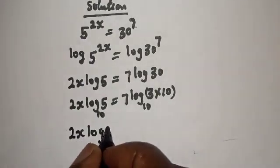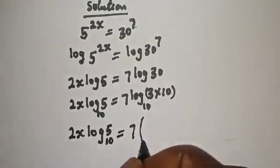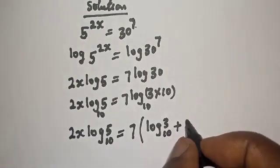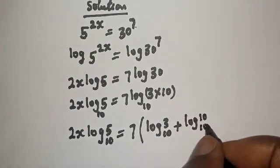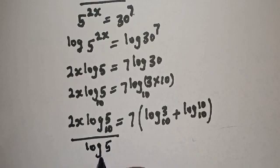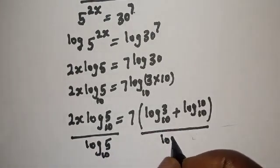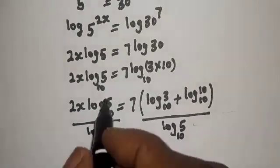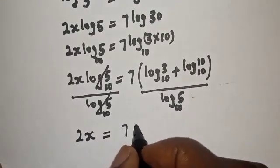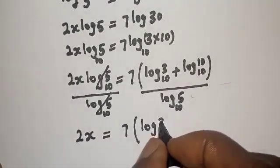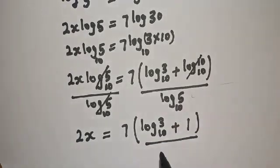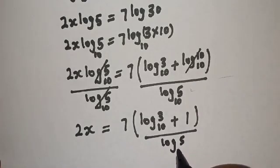2s log 5 base 10 is equal to 7 log 30 base 10 plus log 10 base 10. Let's divide both sides by log 5 base 10. This will cancel, giving: 2s is equal to 7 bracket log 30 base 10 plus 1, all over log 5 base 10.